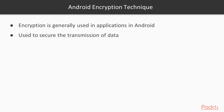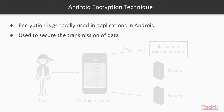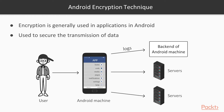Let's talk about basic information about Android encryption techniques. Encryption is generally used in applications. For example, this is an Android machine, this is the user using it, and this is the backend database. If you are using any app on this Android machine, it creates logs and can also send data to another server. If you open any web application or website, it will also go to that web server.